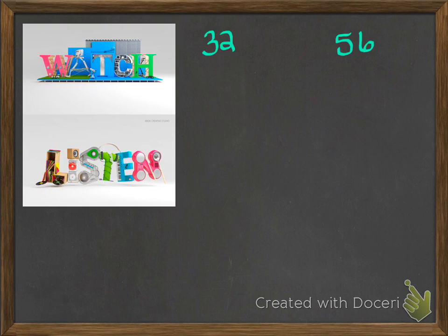Now we're going back to the watch and listen portion of this lesson. Go ahead and put your pencils down. We're going to find the greatest common factor of 32 and 56. However, this time I'm going to show you a different strategy — a different method. We're going to do this by using prime factor trees. They're done in a similar way and I think some of you might prefer this method.